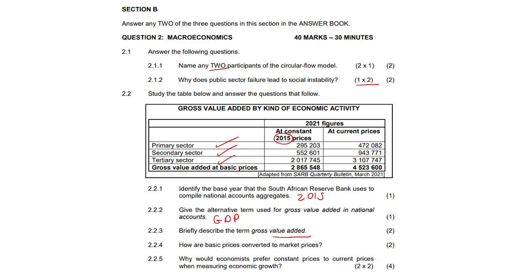2.2.4: How are basic prices converted to market prices? Taxes on products are added to, and subsidies on products are subtracted from, the GDP at basic prices to get the GDP at market prices. That's a very important question.